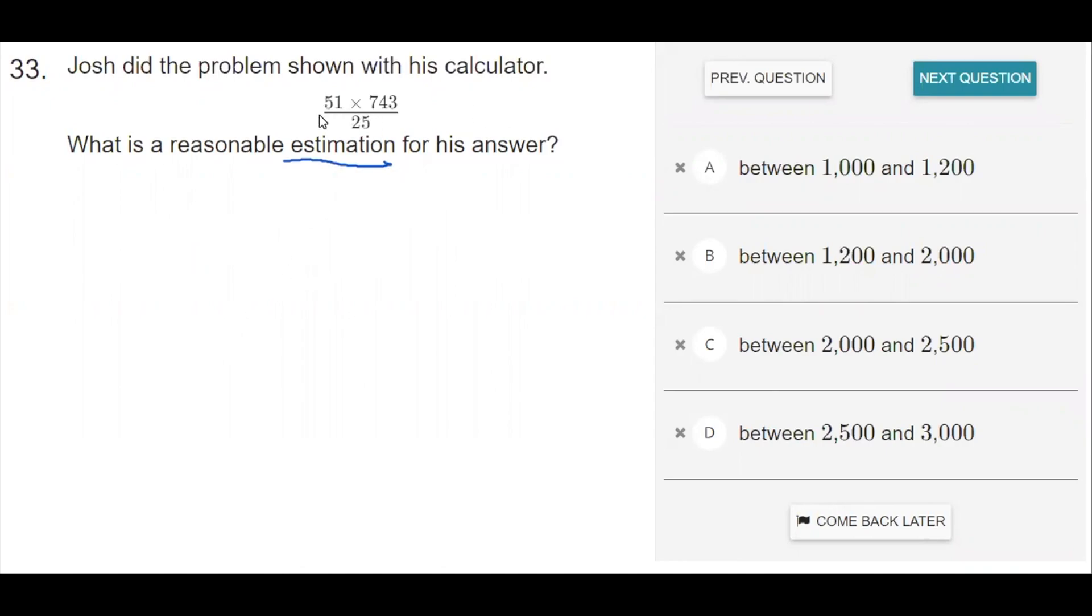So we can round 51 to 50. That's a pretty nice number. 743, we have a couple options, but I'm going to round it up to 750. That's the closest value to 700 that's convenient for us to do computations with.